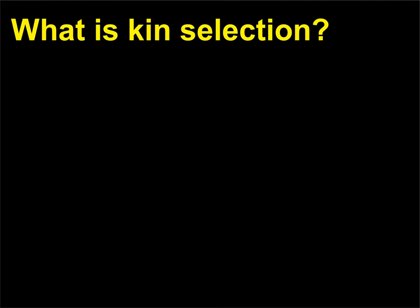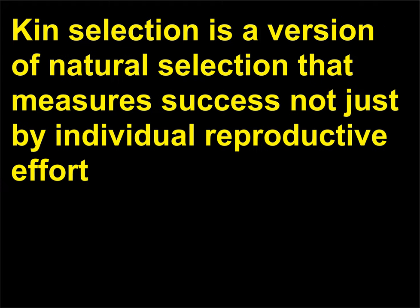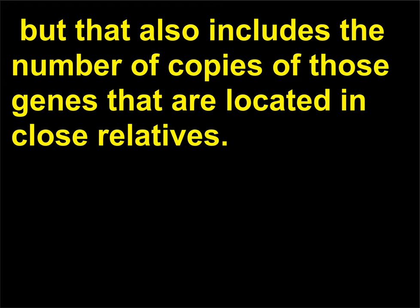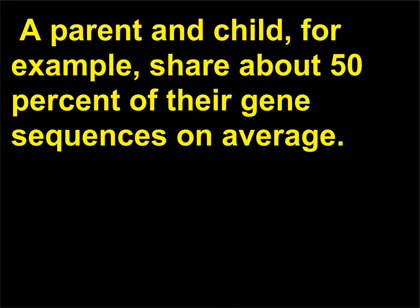What is kin selection? Kin selection is a version of natural selection that measures success not just by individual reproductive effort — how many fertile offspring are produced — but that also includes the number of copies of those genes located in close relatives. A parent and child, for example, share about 50% of their gene sequences on average.